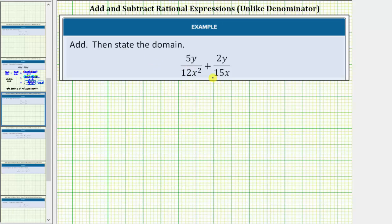We're asked to add the rational expressions and also state the domain. Looking at the sum of the fractions, notice how we do not have a common denominator. So for the first step, we'll determine the least common denominator by looking at the factors of 12x squared and the factors of 15x.